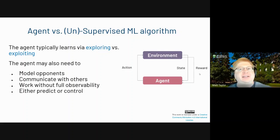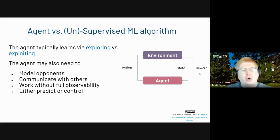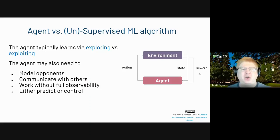Another thing that's different about the agent setting is that you need to think about exploring versus exploiting. For instance, if you're driving to school and a new road opens up, you could continue on your preferred route or try this new road to see if it's faster. If you go on that new road once and it was a little slower, should you rule it out forever? Or should you try it again, because maybe during the summer they pave it, and things change with the seasons.